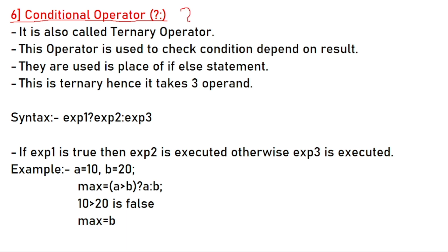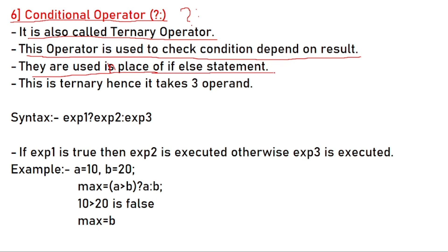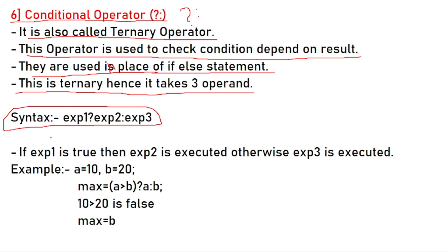Next operator is the conditional operator. It is denoted by question mark and colon. It is also called the ternary operator. This operator is used to check a condition — the result depends on the condition. It is used in place of an if-else statement. Since it is ternary, it takes three operands — operands are variables, values, or expressions. The syntax is: expression1 ? expression2 : expression3.